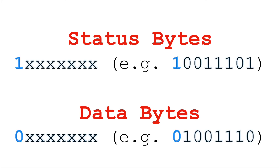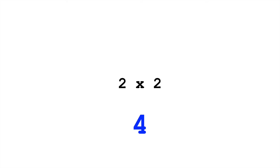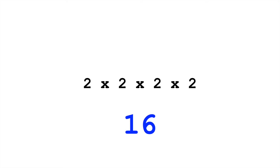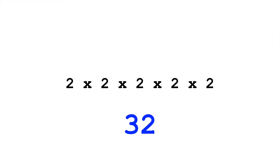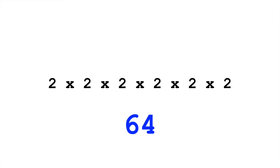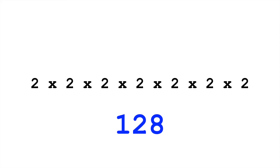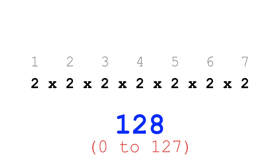Since the first bit is reserved, that only leaves us with 7 bits for the rest of our information. How many values is that? 2 to the 7th: 2×2 is 4, ×2 is 8, ×2 is 16, ×2 is 32, ×2 is 64, ×2 is 128. So the range is 0 to 127.